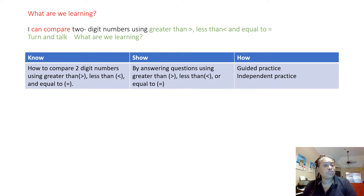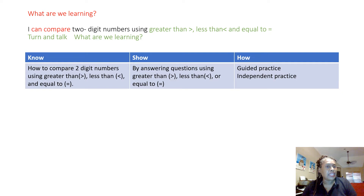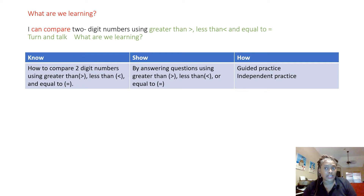What are we learning again? I can compare two-digit numbers — a number with some tens and some ones — using greater than, less than, and equal to as symbols. There is a know, a show, and a how that goes along with this lesson. I need to know what compare means, what two-digit numbers mean, and how to use greater than, less than, and equal to in equations. I will show this by answering questions using those symbols. How? We will have guided practice and independent practice.